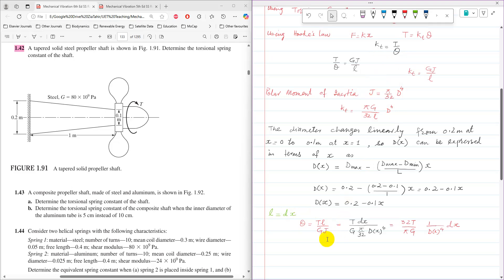So then the expression, this torsion equation, can be written as theta equals T L over J G, and then J is pi by 32 into DX raised power 4 and length is DX. So then the expression which we'll use here: 32 T over pi G, 1 over DX raised power 4 into DX.